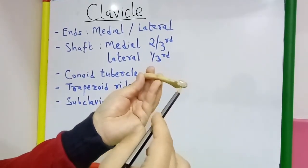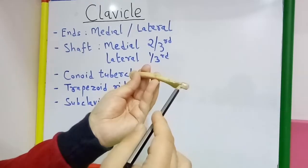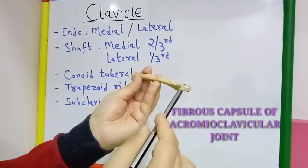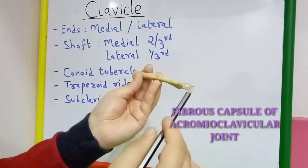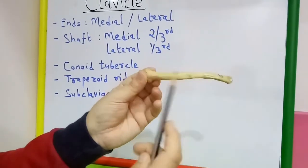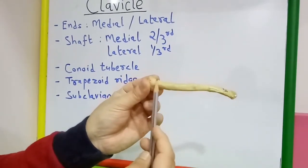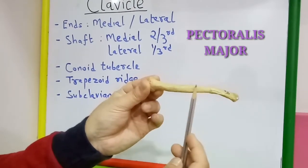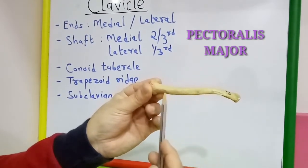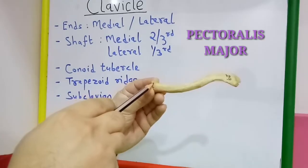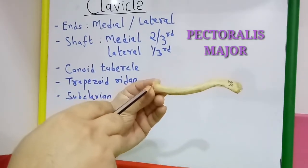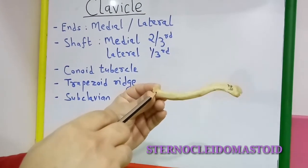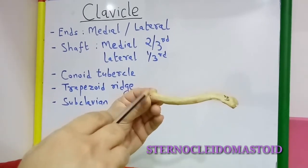Around the margin of the articular facet on the lateral end there is attachment of the fibrous capsule of the acromioclavicular joint. The anterior surface of the medial two-third gives origin to the pectoralis major muscle, whereas the medial end of the superior surface, which is a rough area, gives origin to the clavicular head of the sternocleidomastoid muscle.